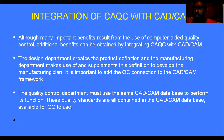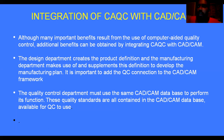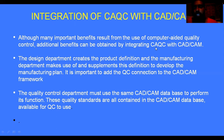In this automatic cycle, any defects detected in the object cause the total information to be sent to CAD, then CAD to CAM, and CAM to CAQC. Many important benefits result from the use of computer-aided quality control. Additional benefits can be obtained by integrating CAQC with CAD and CAM.